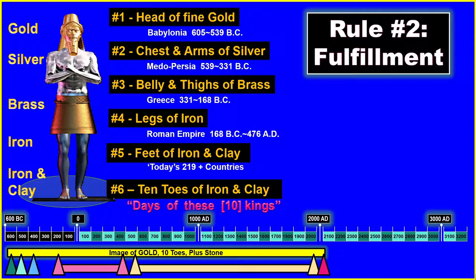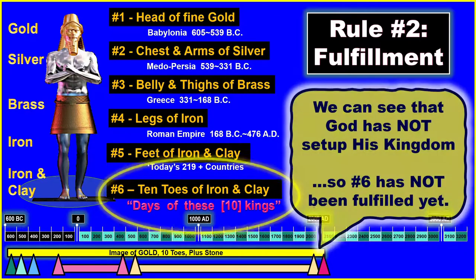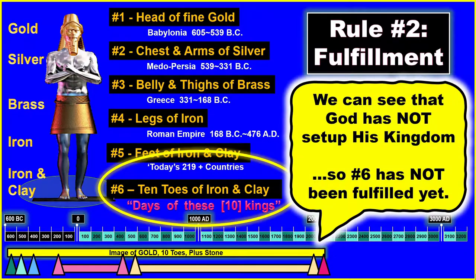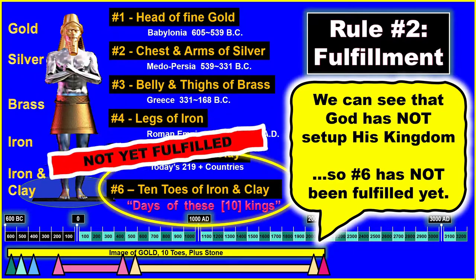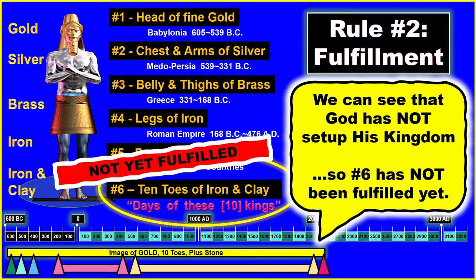Let's consider the prophecy in Daniel 2 again. The last point in Daniel 2 are the ten toes of iron and clay, and we can see that God has not set up his kingdom yet. So number six has not yet been fulfilled.